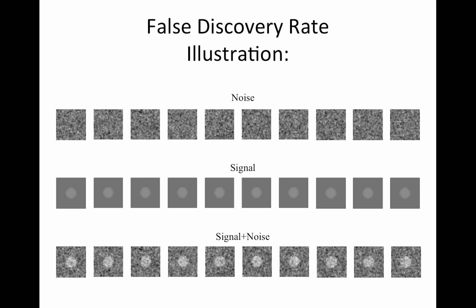Here's the simulation illustration — I believe originally from Tom Nichols, and also in our textbook. This slide shows how the data were simulated: noise added to signal, with each square representing a statistics map from a single study. We have 10 studies. Activation should appear in the middle — that's where the signal is. Outside the circle are all null voxels. We'll now threshold these controlling each of the three error rates.